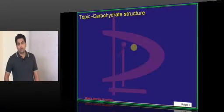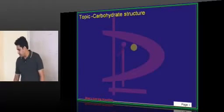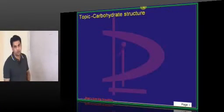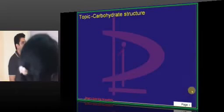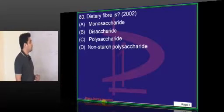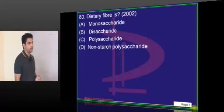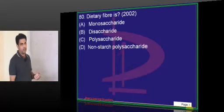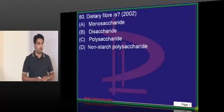Regarding metabolism of carbohydrates as well as proteins, they are mainly concentrating on the chemistry part. Chemistry has a good number of questions — more than what we expect from metabolism proper, where they ask very few. So we will go in that fashion. Dietary fiber: is it a monosaccharide, a disaccharide, a polysaccharide, or a non-starch polysaccharide? It is a non-starch polysaccharide. Why? Because non-starch substances cannot be digested by the body.